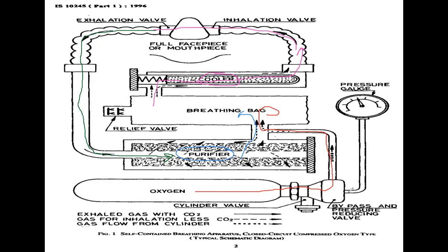For this oxygen supply, we check the pressure gauge to ensure sufficient pressure in the green zone. If not sufficient, we must return from the confined space. The apparatus includes a bypass and pressure reducing valve, exhalation valve, inhalation valve, and relief valve. Different valves and accessories are involved. Some valves can be operated manually and some automatically, depending on the situation.